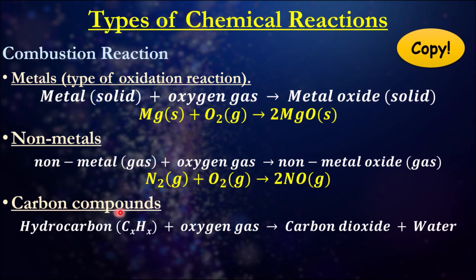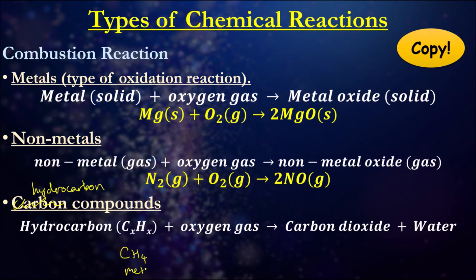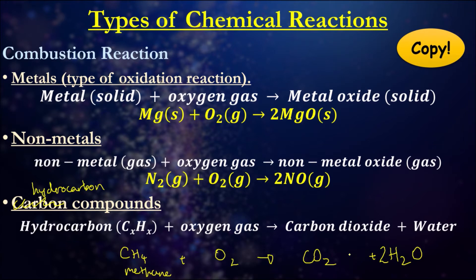The last type is with carbon compounds or hydrocarbons — we'll rename this as the reaction with hydrocarbons. This includes things like fossil fuels and biofuels. A hydrocarbon reacts with oxygen gas to produce carbon dioxide and water. An example would be methane reacting with oxygen gas to produce carbon dioxide and water. You can also balance it out, giving the balanced chemical equation to represent that reaction.